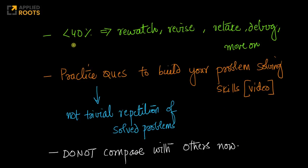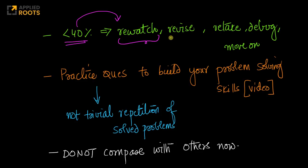If you are obtaining less than 40% marks, then re-watch all the concepts related to the problems you could not solve — re-watch those videos wherever you could not solve to understand the concepts better. Revise your notes, retake the questions, debug what you're lacking, and then move on to the next topic. Very simple.